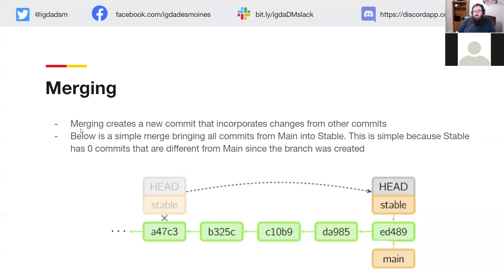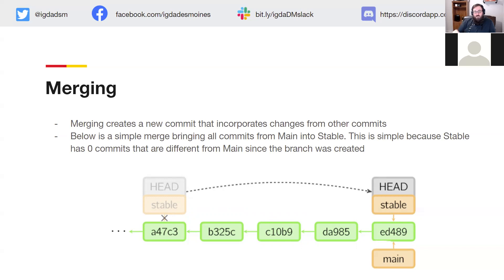Next is merging — this is where it gets fun. Merging creates a new commit that incorporates changes from other commits. A simple merge brings all commits from main into the stable branch when stable has zero different commits from main — it just needs to catch up. The stable branch is continuously being pushed into master. They create the branch called stable and need to move it up to main, so they do a merge from main into stable. This is interesting because in this case it may not actually require a new commit.